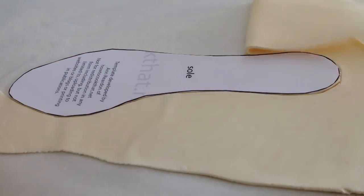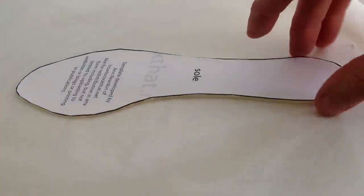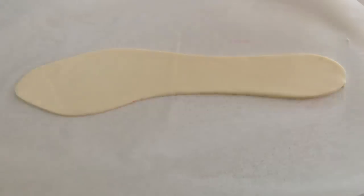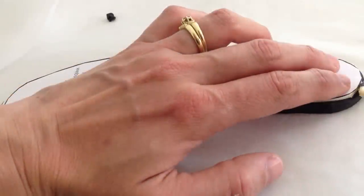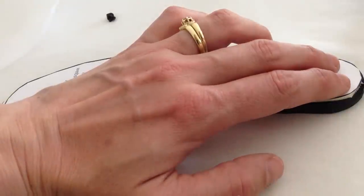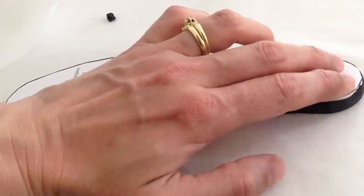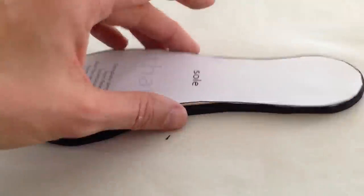Roll out some cream fondant and cut the inner sole template size. Then rub a tiny amount of water onto the black sole and add the cream sole over the top. If it stretches a little as you add it like mine did, just add your template back over the top and trim it to shape.